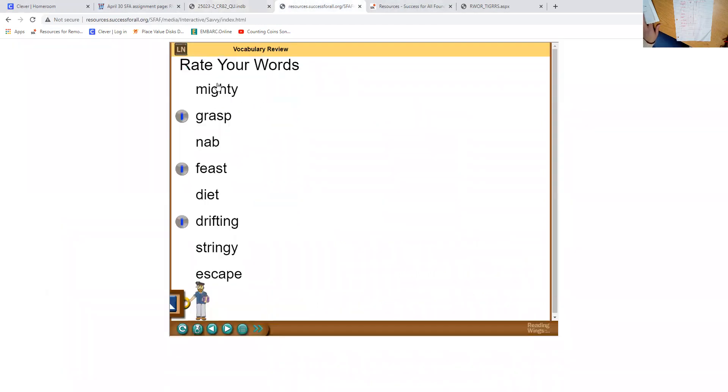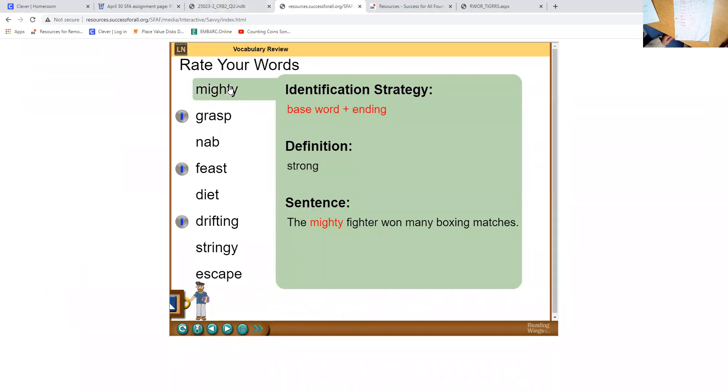Let's go ahead and go over those vocabulary words. So you'll go ahead and go back down day one and fill that in. Mighty means strong. The mighty fighter won many boxing matches. Grasp means hold. I tried to grasp my dog's collar as he ran for the door, but he was too quick for me.